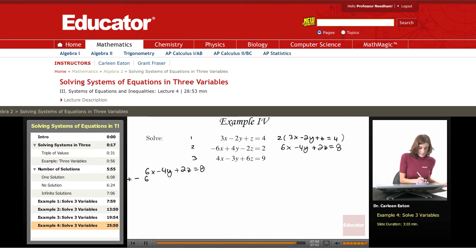So plus negative 6x plus 4y minus 2z equals 2. Now, you might have already seen what happened. I was really just focusing on getting the z's to have opposite coefficients so they would cancel out. But what happened is...